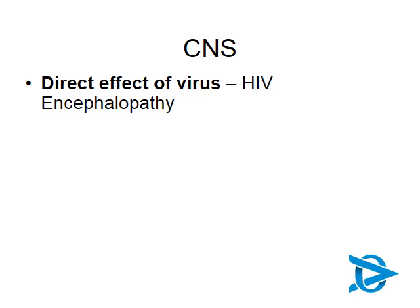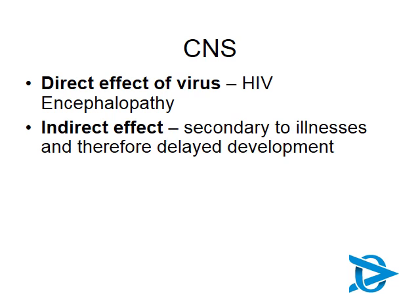Let's start and look at the central nervous system and HIV in children. There are different ways in which HIV affects the central nervous system. Unfortunately, many of the cells within the central nervous system have CD4 receptors on them, and you therefore can have a direct effect of the virus. We'll talk more about HIV encephalopathy later on. There's also an indirect effect — if a child has a variety of illnesses, malnutrition, and is not developing properly, you can also see delays in neurodevelopment.